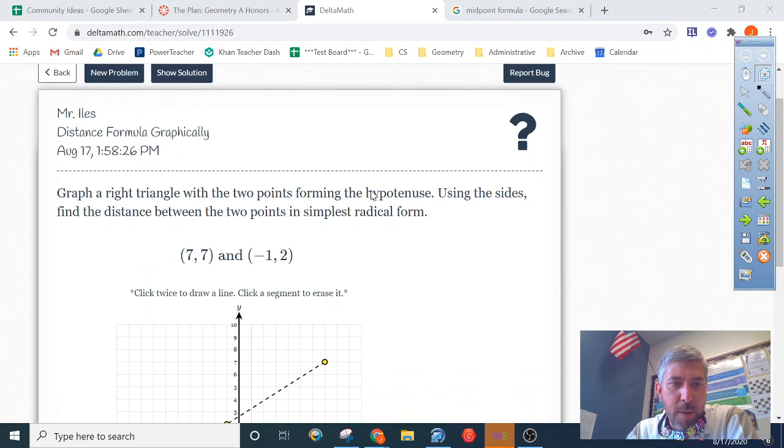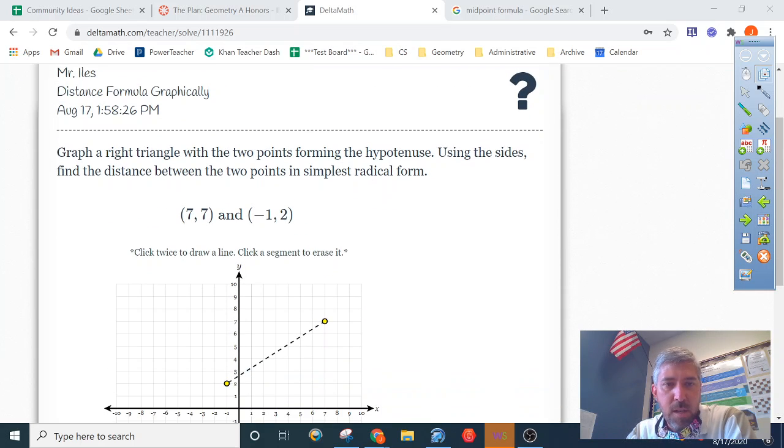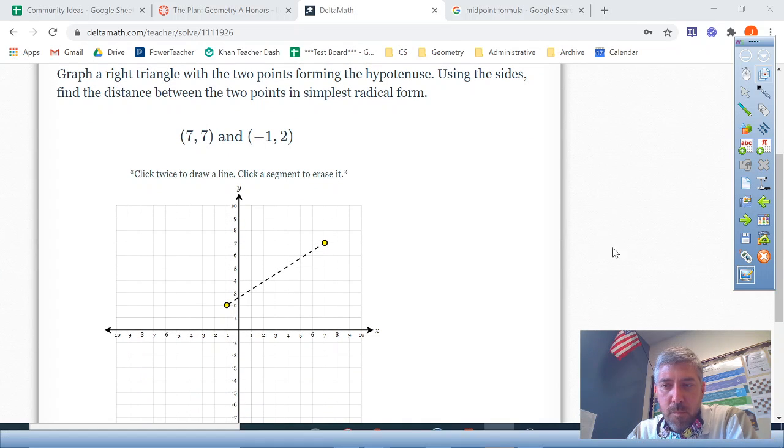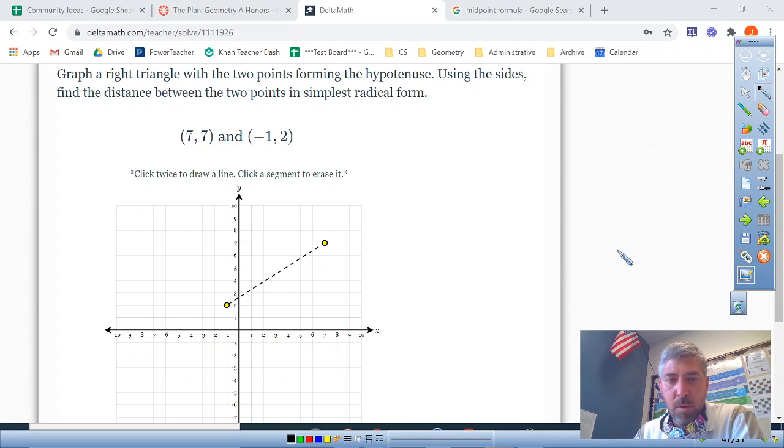The distance formula is a totally valid approach, but I think it is much simpler if we use a component-based approach with right triangles. So let's have a look and see what that is. This is in DeltaMath, distance formula graphically. I'm going to work with my tools here and then I will complete the problem in DeltaMath. But first we're going to use the tools I have for writing on the board. So what we're going to do is we're going to draw the components. It says graph a right triangle with the two points forming the hypotenuse.